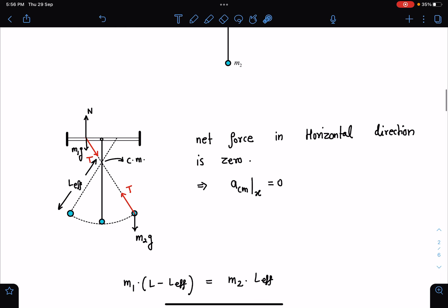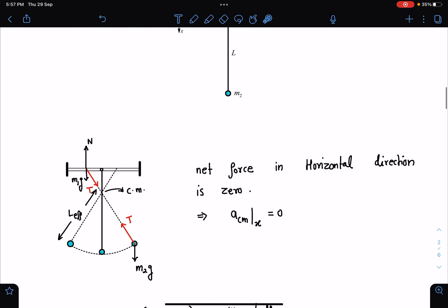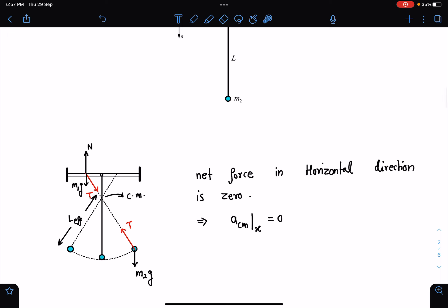So here, first thing when we simplify this and let's analyze the situation at any general location. So whether this mass M2 is going this side or this side, it has to move in such a way that its center of mass cannot move in horizontal direction.